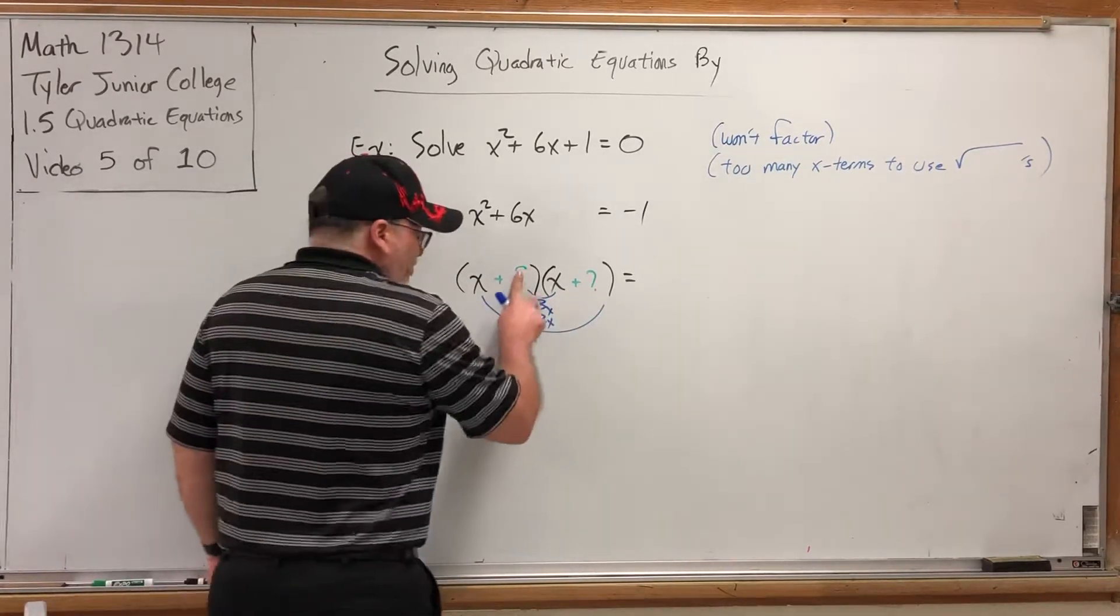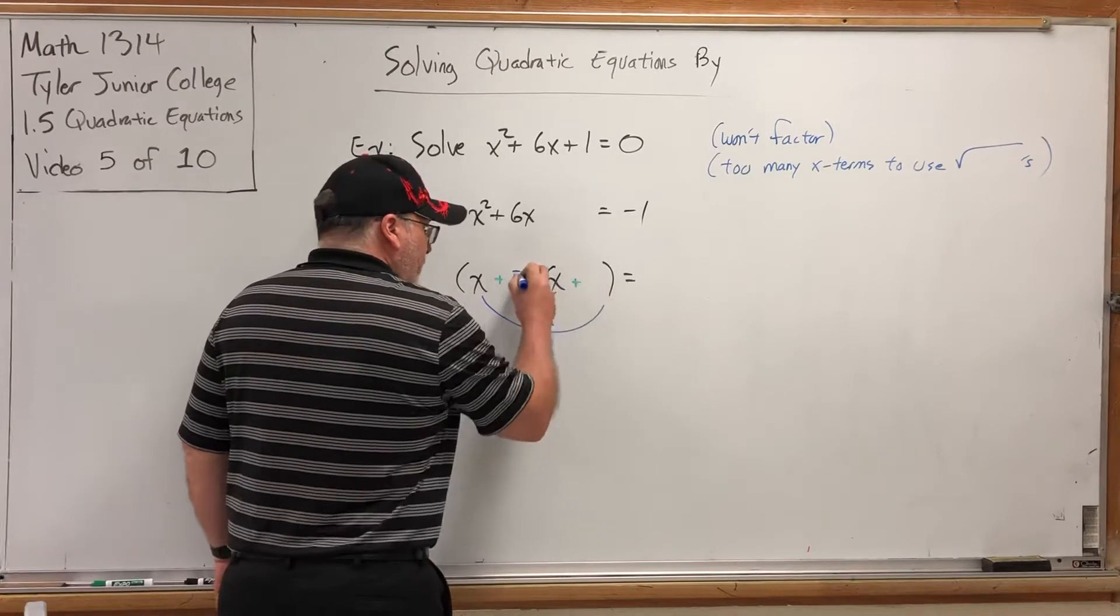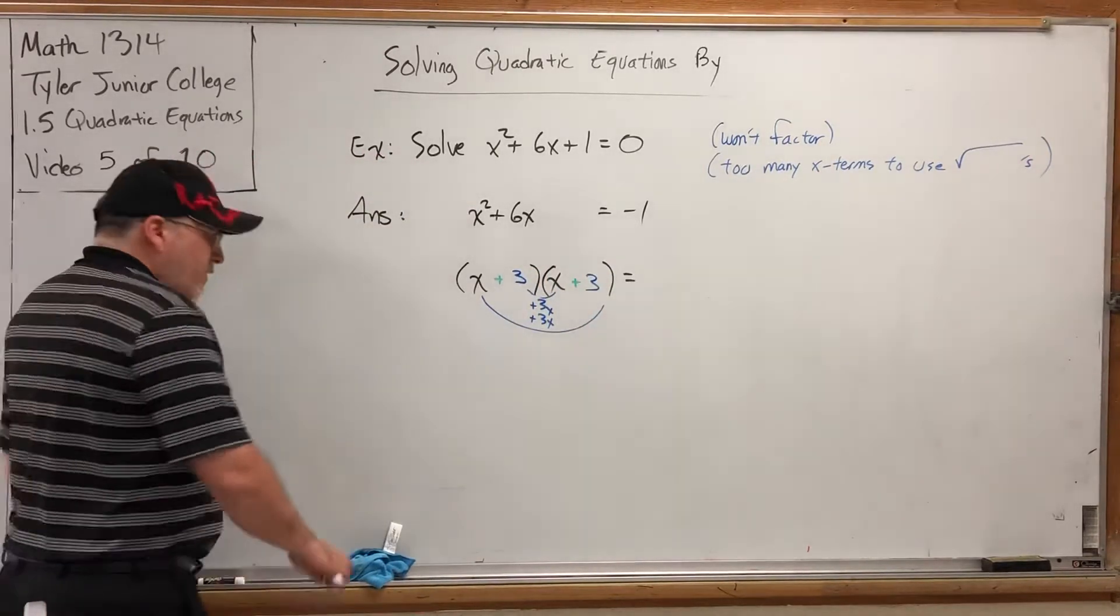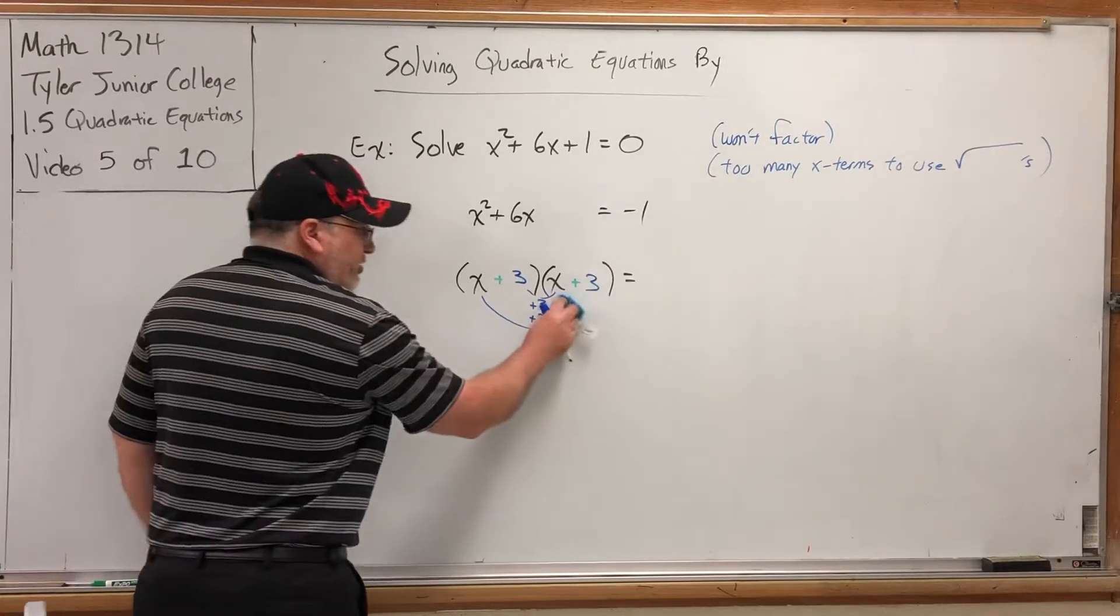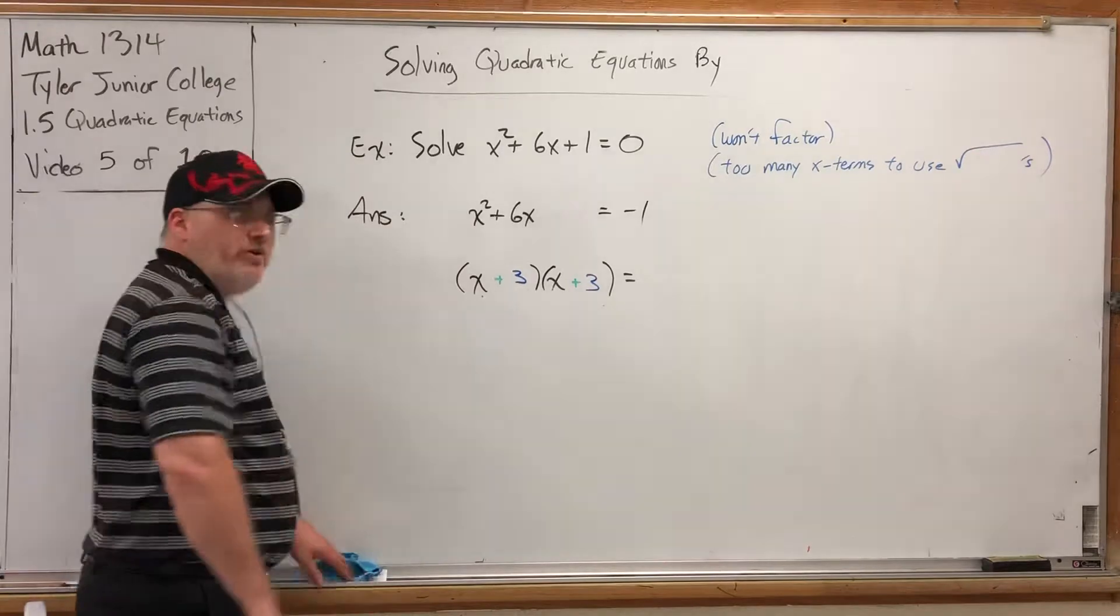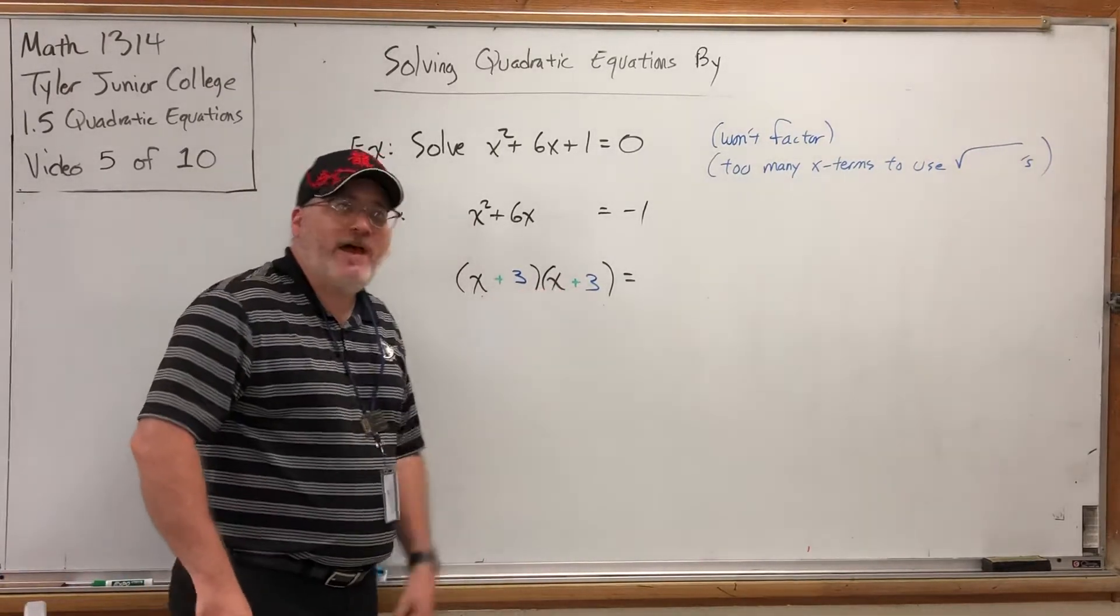Okay, well, that tells me that these two question marks should be 3s. So this is the factorization I'm shooting for. This is the factorization that is guaranteed to give me the x squared up front, the 6x in the middle, and at the same time have these factors match. But we're not quite out of the woods yet.